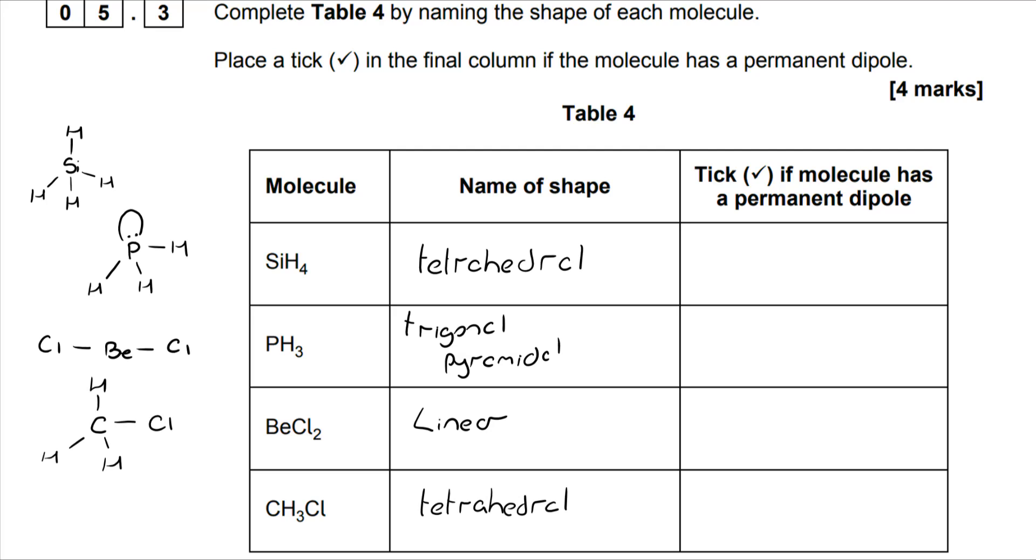And finally, for the shapes, CH3Cl is also tetrahedral, four bonding pairs, no lone pairs, around carbon, which is in group four.